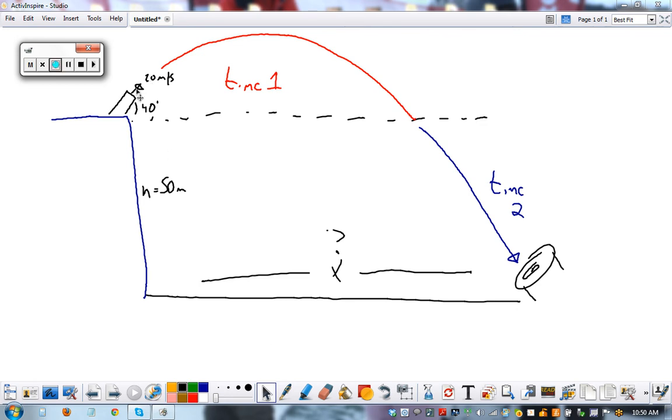We launch a cannonball at 20 meters per second out of the cannon at an angle of 40 degrees. This is the angle. It falls a height of 50 meters. How far away does it hit this target?